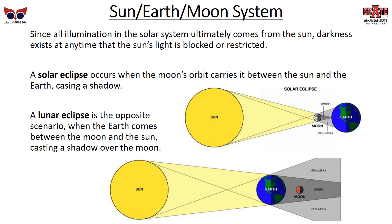Since all illumination in the solar system ultimately comes from the Sun, darkness exists any time the Sun's light is blocked or restricted. A solar eclipse occurs when the Moon's orbit carries it between the Sun and the Earth, casting a shadow. A solar eclipse results in a very small area of umbra where the Sun is completely blocked out, and a wider area of penumbra which is a partial blocking of the Sun. A lunar eclipse is the opposite scenario, when the Earth comes between the Moon and the Sun, casting a shadow over the Moon. The umbra is much wider because the Earth is wider than the Moon, so it can cover the entire Moon, and fully half the Earth can see at least a partial lunar eclipse.